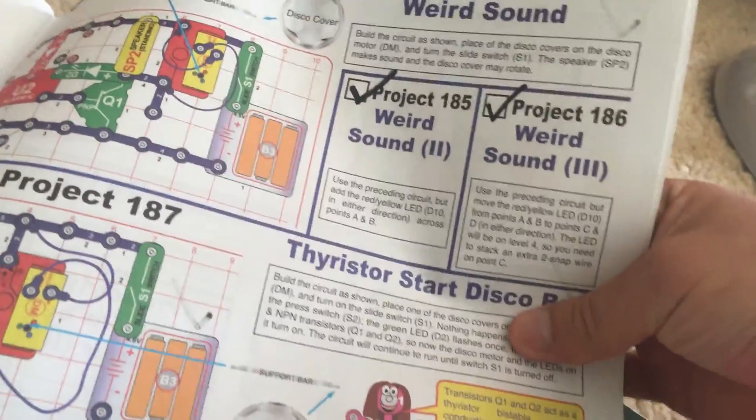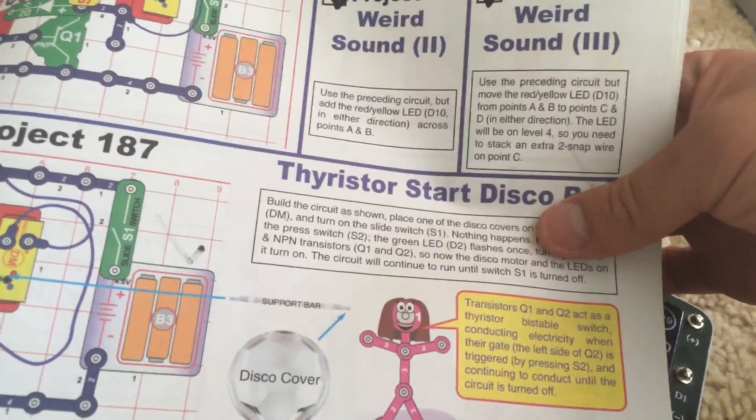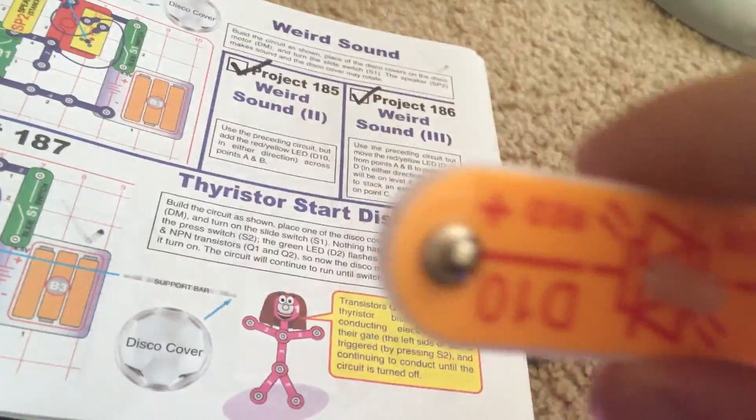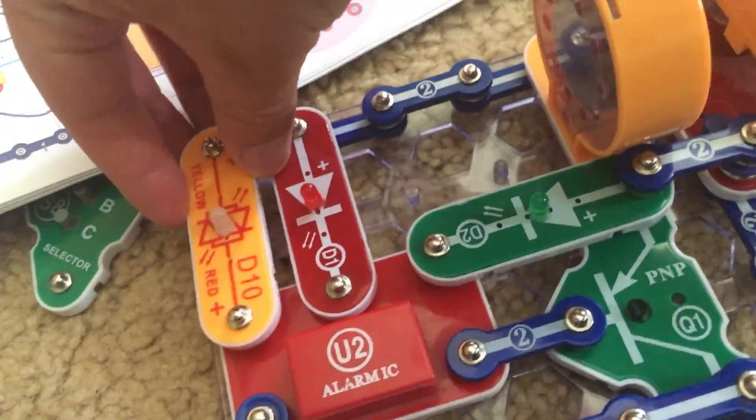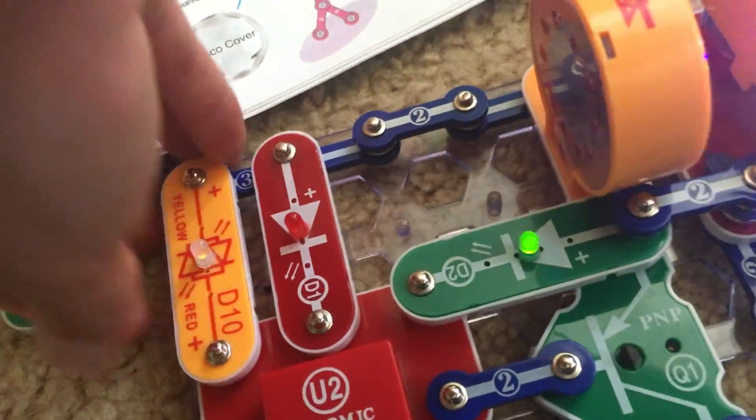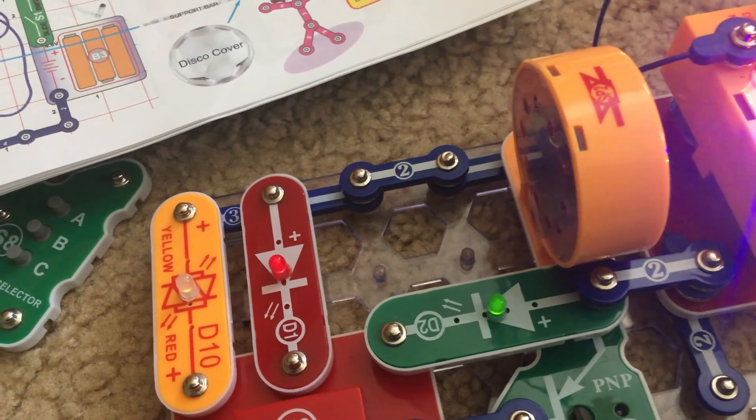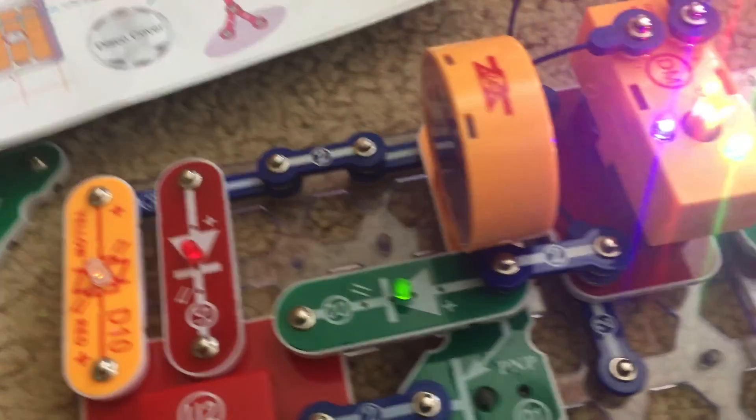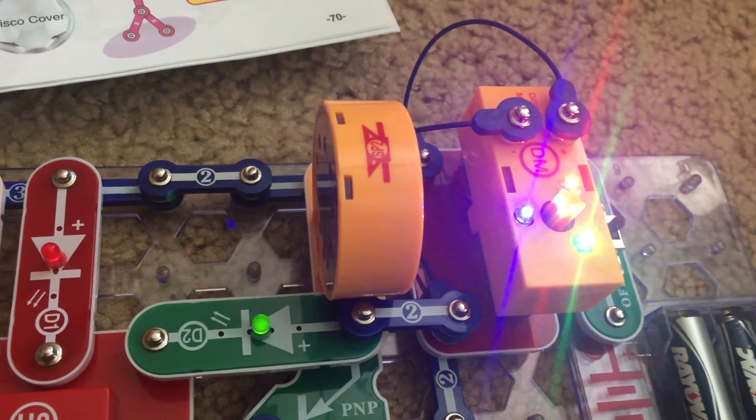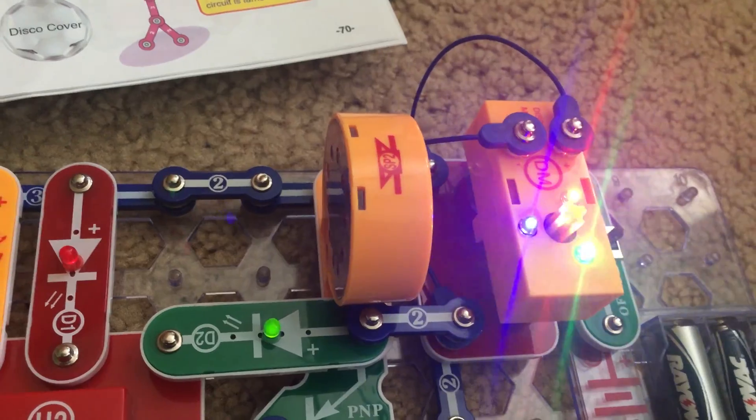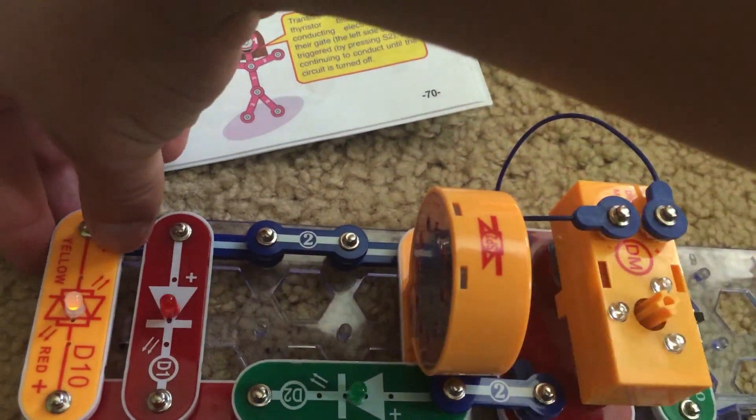Now going right on to project 185, weird sound number two. We can place the red and yellow LED in either direction across these two points. Now it changes the sound a little bit but you'll notice that the intervals of the alarm are longer. The sound intervals are longer.